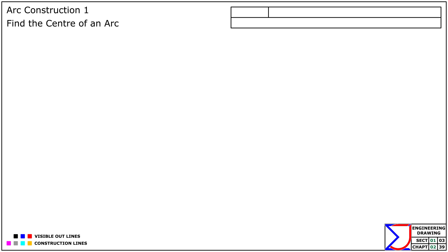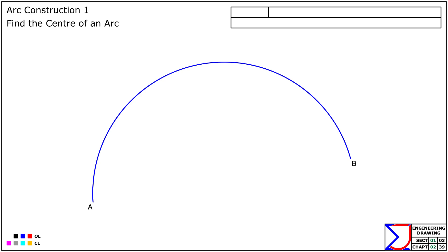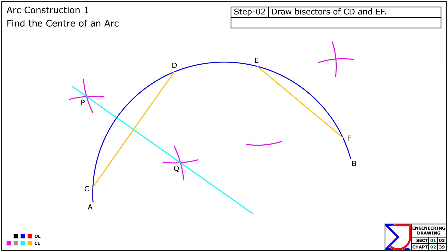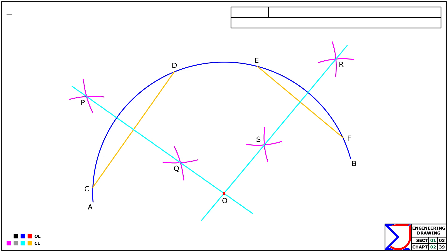Arc Construction 1: Let's start by finding the center of a given arc. Suppose AB is the given arc. Draw two chords CD and EF of any lengths within the arc. Now construct the perpendicular bisectors of CD and EF. The point where these bisectors intersect is the center of the arc, denoted as point O. This method ensures accurate placement of the center for any given arc.